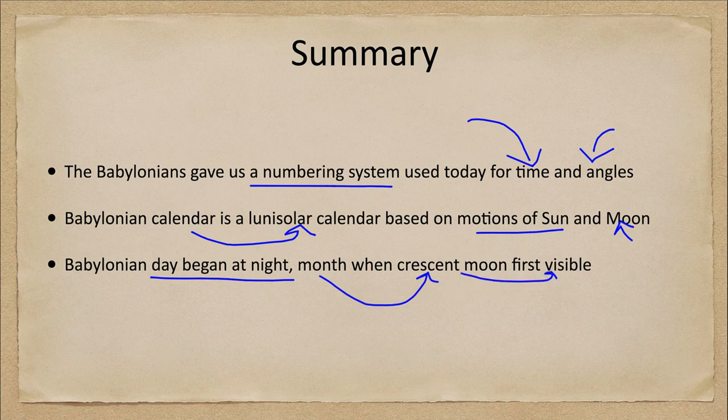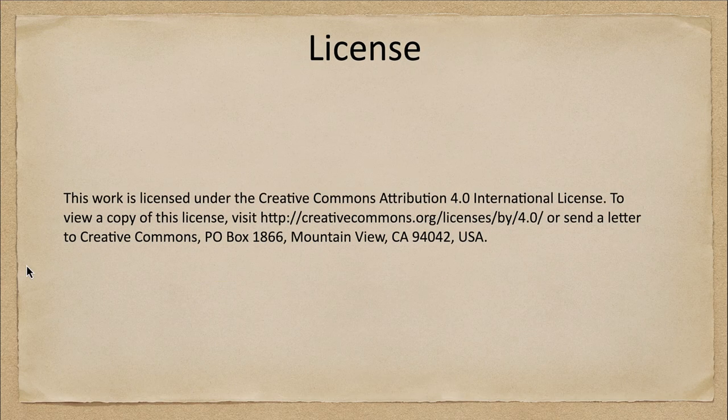The month began when the crescent moon was first visible in the evening sky right after sunset. That concludes this lecture on time and the calendar from the Babylonians. We'll be back again next time for another lecture — until then, have a great day everyone, and I will see you in class.